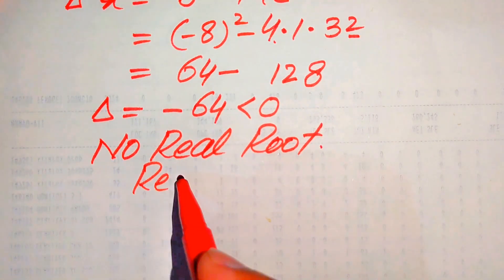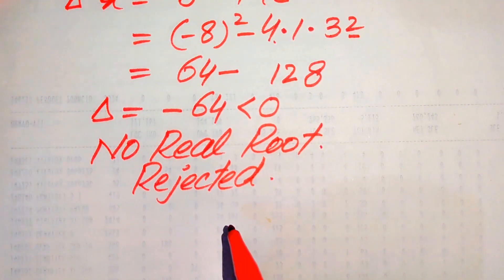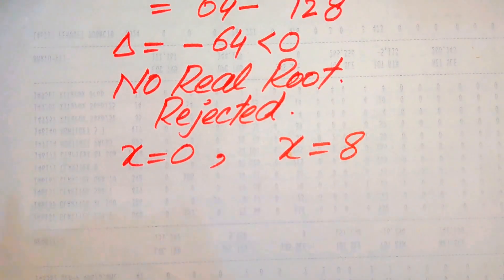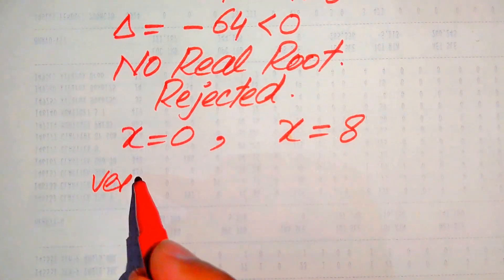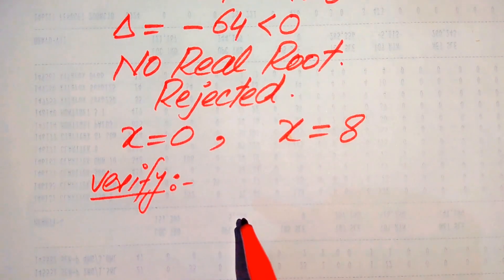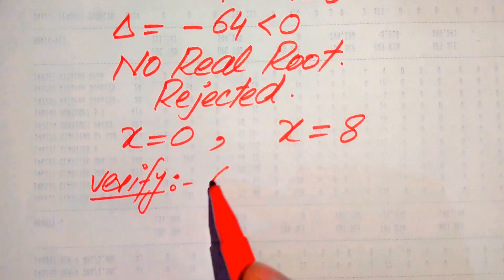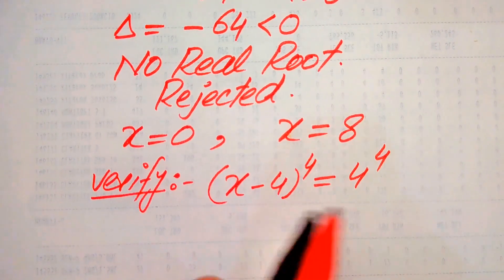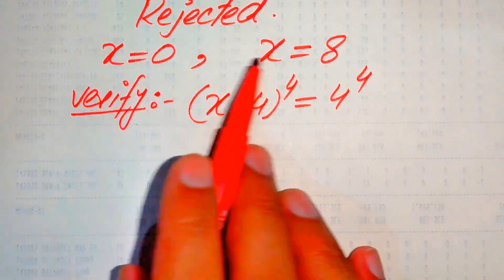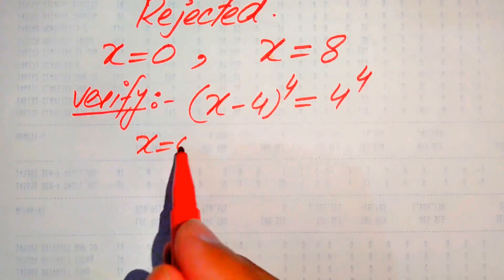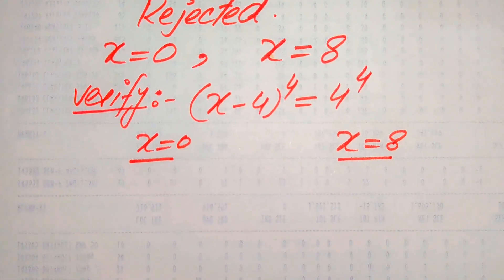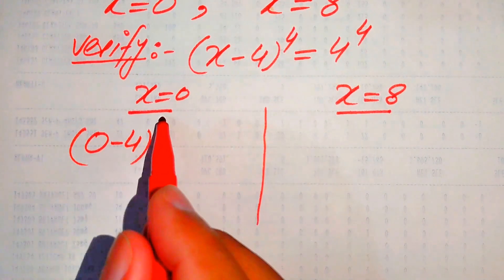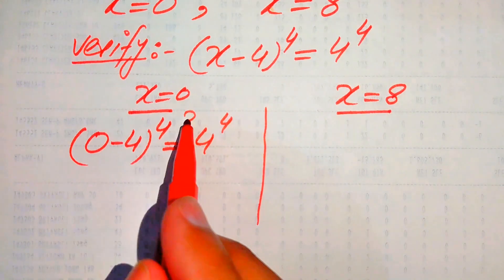Since Equation 2 has no real roots, the only two real roots of the given equation are x equals 0 and x equals 8. We now verify these roots by substituting back into the original equation (x minus 4) to the power of 4 equals 4 to the power of 4. For x equals 0: (0 minus 4) to the power of 4 equals 4 to the power of 4. This is our verification step.